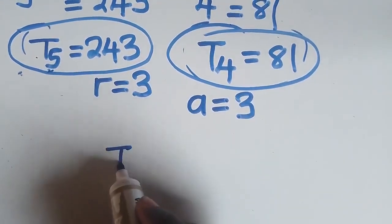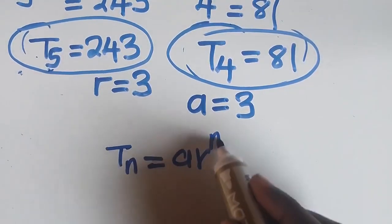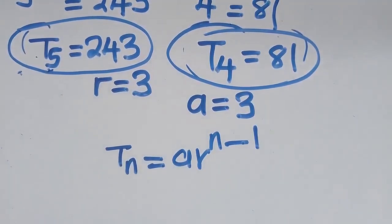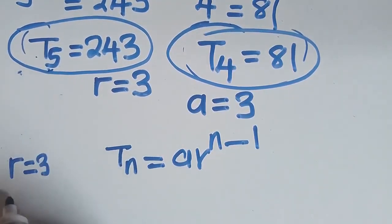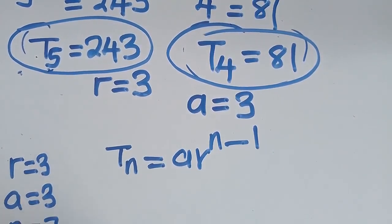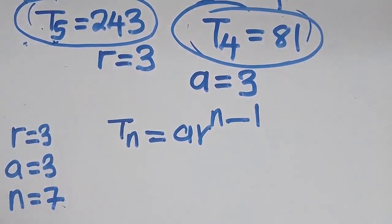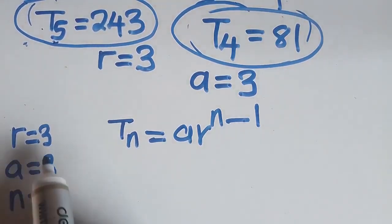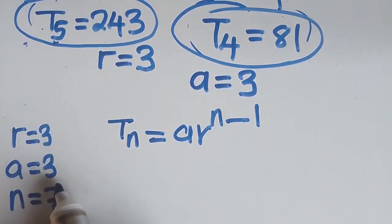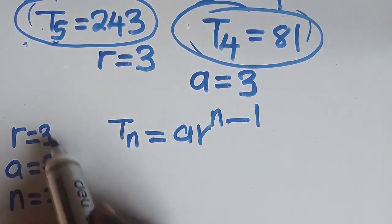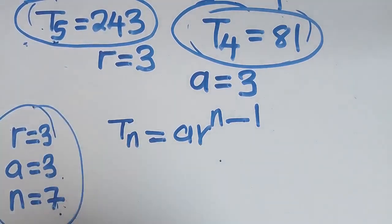We are going to use the formula T_n = A · R^(N-1). The common ratio remains 3, the first term remains 3, and N will be equal to 7 because you want to find the seventh term. Where there is R, you put 3; where there is A, you put 3; where there is N, you put 7. Once you substitute, everything is simple.